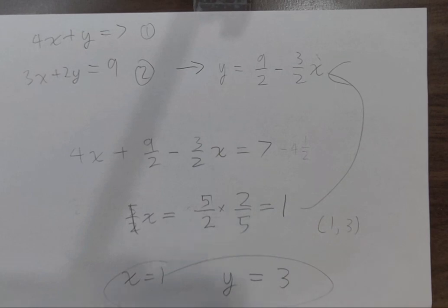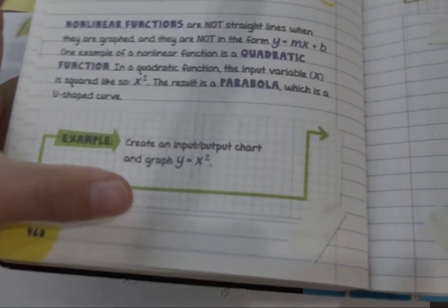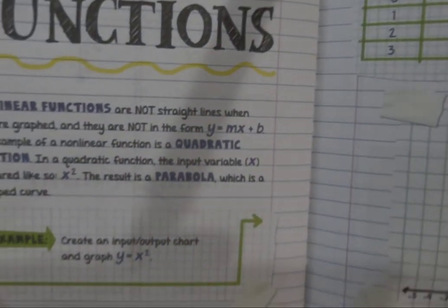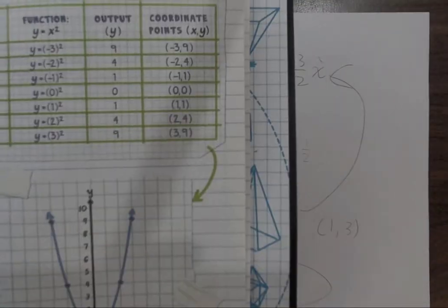But what about non-linear equations? Non-linear equations are not straight lines when graphed, and they are not in the form of y equals mx plus b. One example is a quadratic function. In a quadratic function, the input variable x is squared, like x squared. The result is a parabola, which is a u-shaped curve. Here's an example of a quadratic function, and here is a parabola. This is the result.